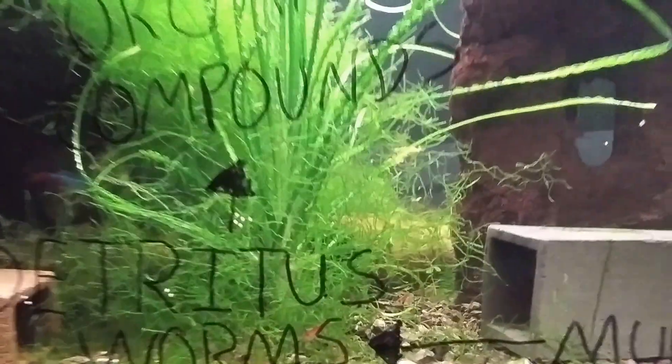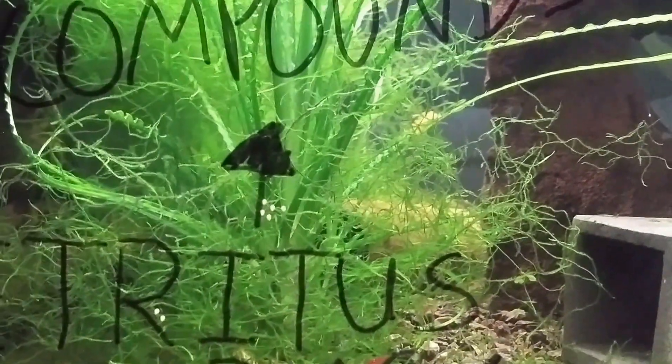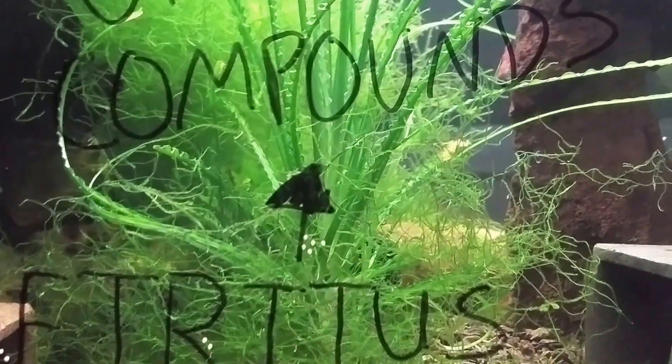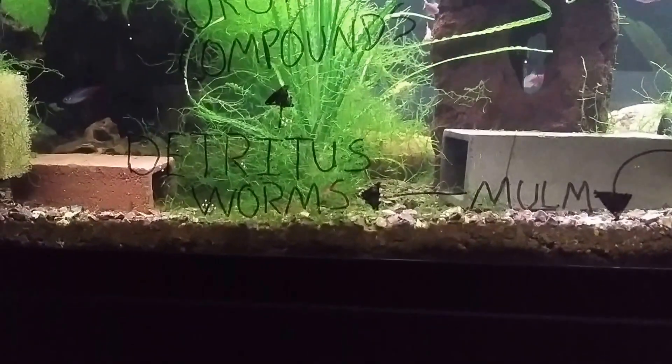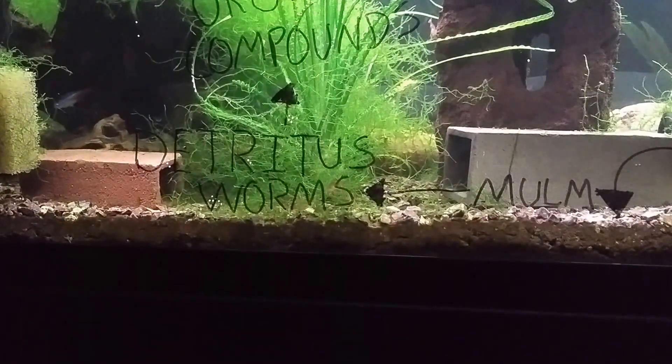I'm going to caution you against the planaria and tell you how great the detritus worms are. The planaria aren't really that big of a deal — they're a carnivorous worm. They generally show up if you overfeed your tank, and their head looks sort of like an arrowhead drawn on the glass. They have a very pointed triangular shaped head and a broad flat body, and when they move they kind of move like a snail — in a wave or undulating pattern.